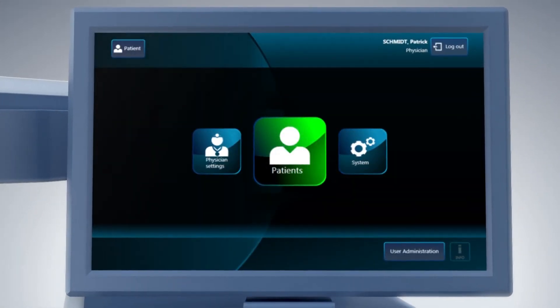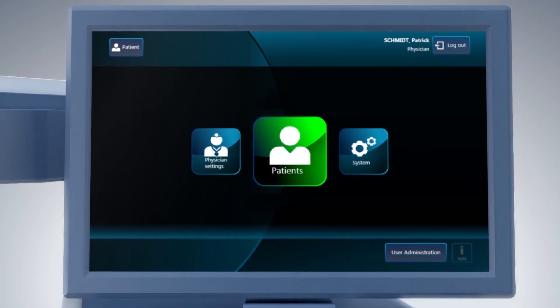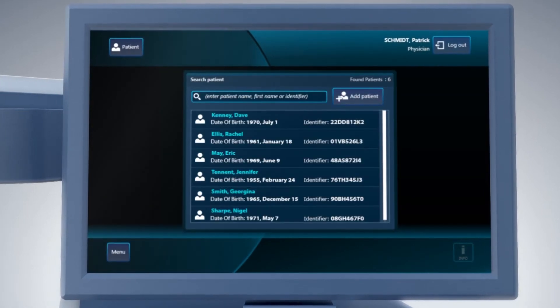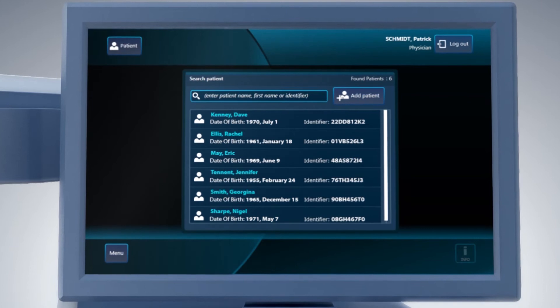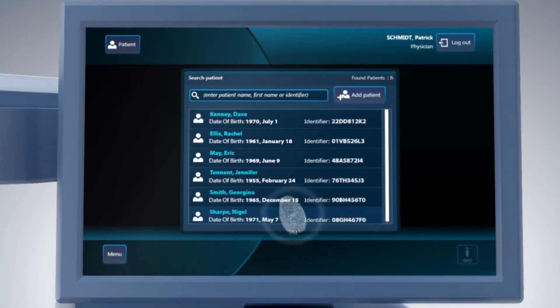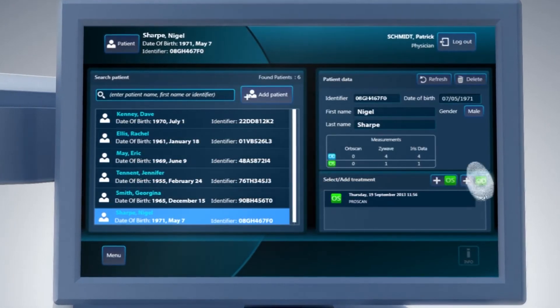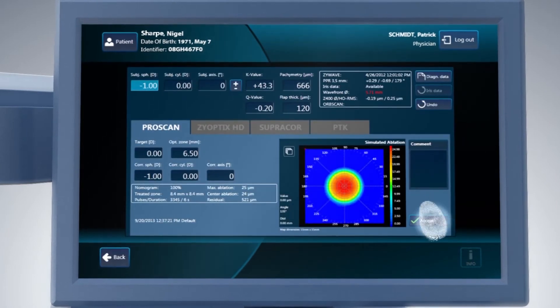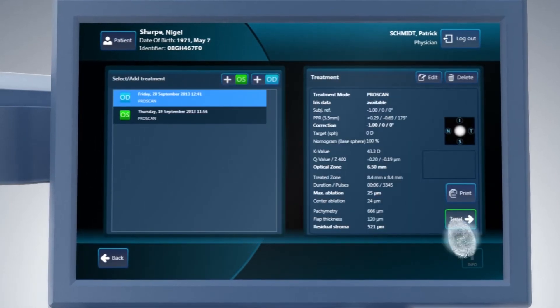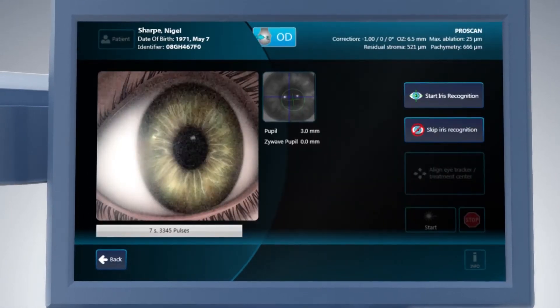The Toneo 317 is remarkably easy to use. The intuitive icon-driven menu and touch screen technology allows you to work more effectively. It takes just four steps to complete a procedure. Select patient, choose treatment, confirm treatment and treat. It's as simple as that.